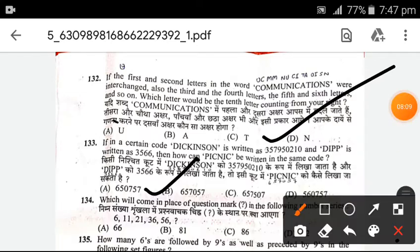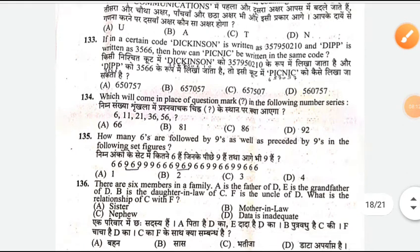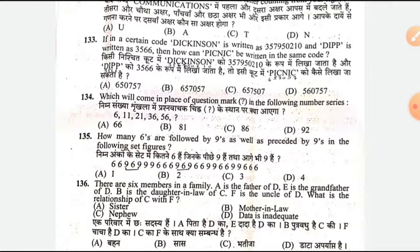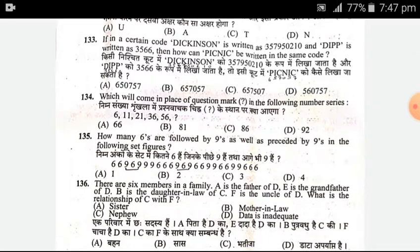Which will come in place of the question mark in the following number series: 6, 11, 21, 36, 56? The next number in this series will be B — 81.